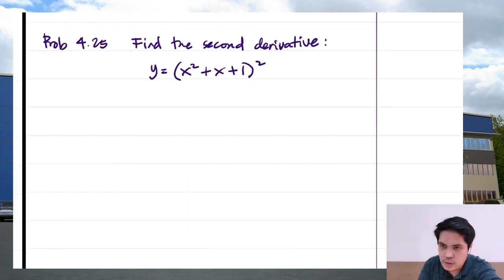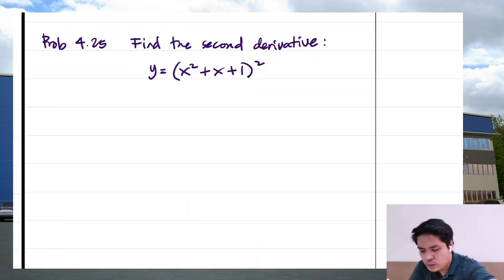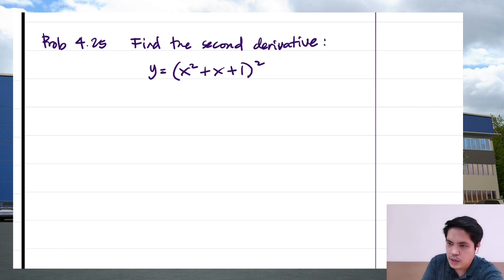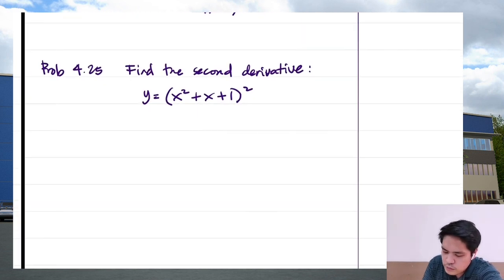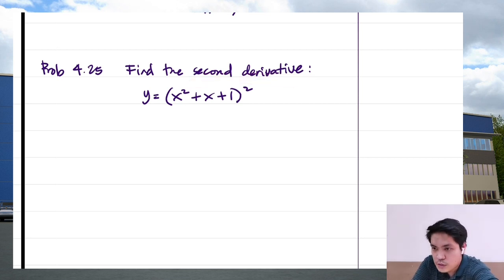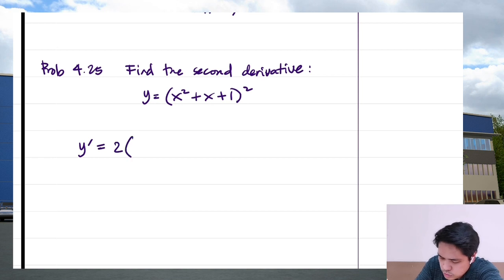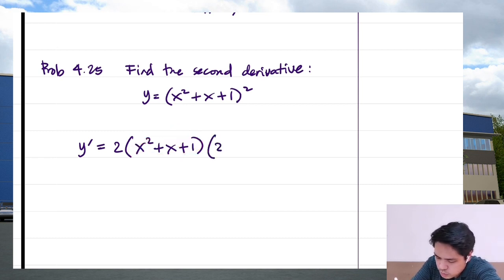Let's try Problem 4.25: Find the second derivative of the function y = x² times the quantity (x² + x + 1). To find the second derivative, we first need the first derivative. Using the chain rule or general power formula, y prime is equal to 2 times (x² + x + 1) raised to 1, times the derivative of the inside, which is 2x + 1. That is the first derivative.